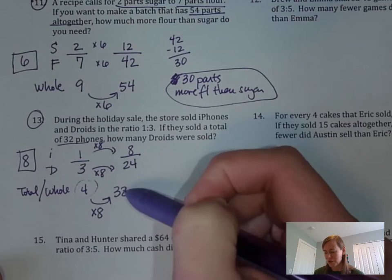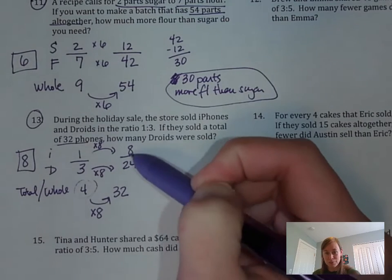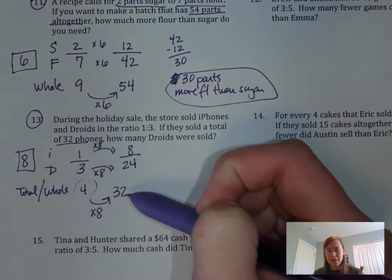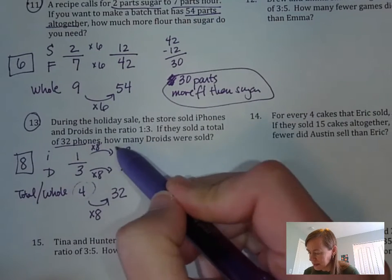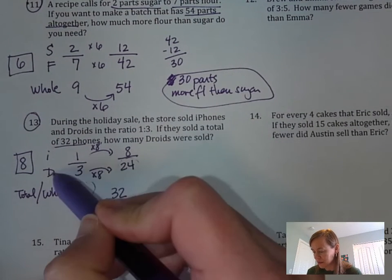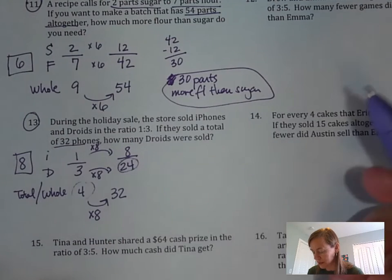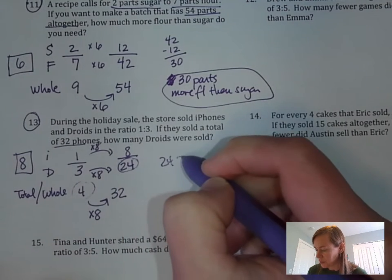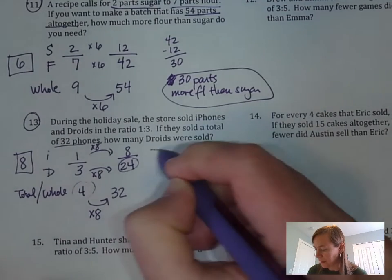That should be your final ratio there. Let's just add them up and they should equal 32. 8 plus 24 should equal 32 and it does, so we've double-checked and we're good there. Now what was the question? It says how many Droids were sold? That piece of information is right here on the D row, D for Droids. So 24 Droids were sold, and that's your answer.